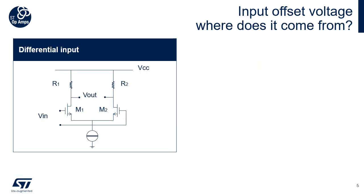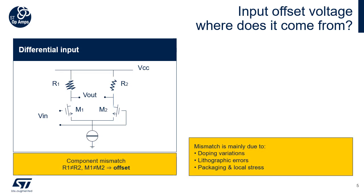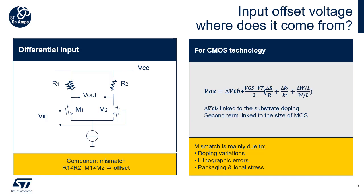The cause of the input offset voltage is well known. It is due to the inherent mismatch of the input transistors and components during fabrication of the silicon die, and the stress placed on the die during the packaging process — a minor contribution. These effects collectively produce a mismatch of the bias of the input circuit, resulting in a differential voltage at the input terminals. For CMOS technologies, this equation shows the root cause of the input offset voltage, where the size of the MOS width and length and the doping substrate play a key role in the VIO error.